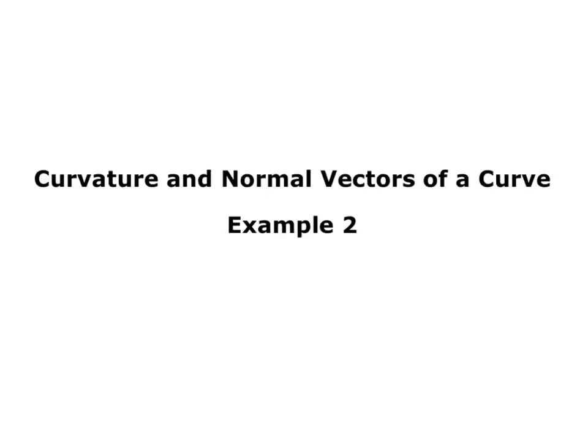Hi, this is Catherine Schmer, and we're going to do another example on curvature and normal vectors of a curve. This example will involve sine and cosine, which will let us review our Pythagorean identity for sine and cosine.